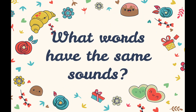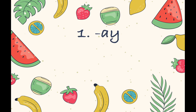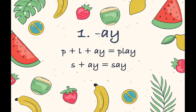Now, what words have the same sounds? What words have the A sound? That's right — play. We combine P, L and A and we get play. Another example is say: ss, a, say. Next is stay: ss, t, a — you get stay.